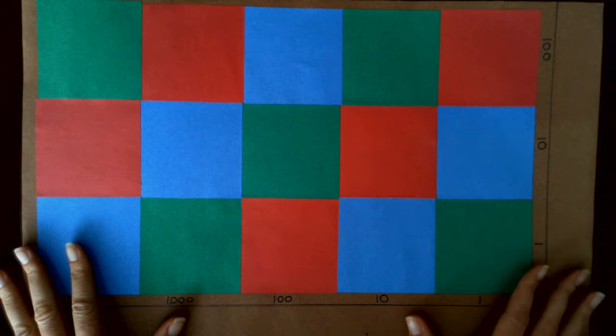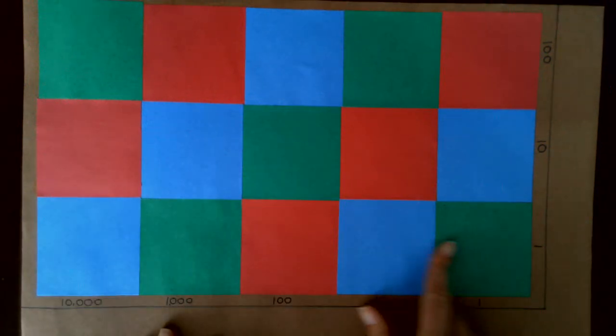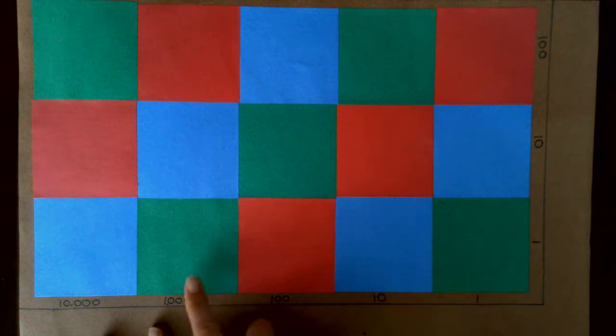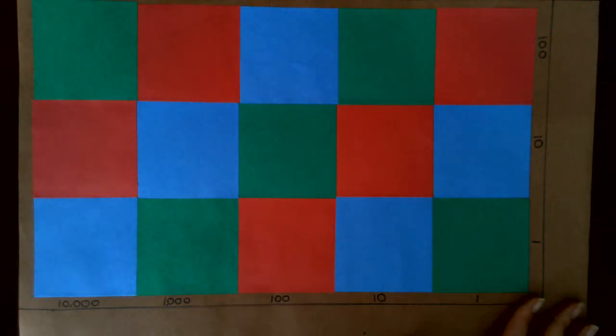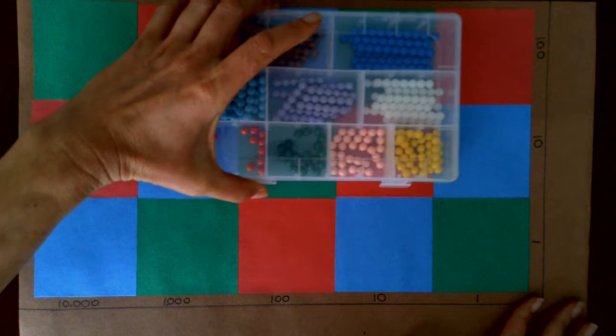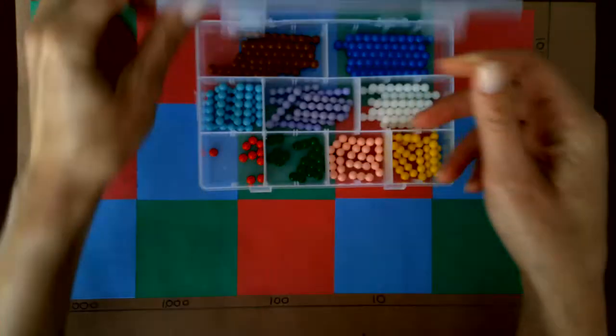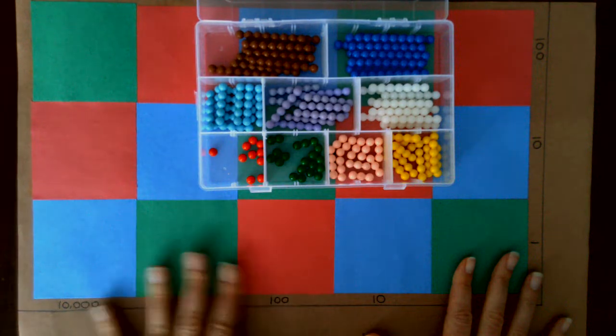One thing you'll notice is this is in the traditional Montessori place value colors and we're going to be using the colored bead bars as well. This is made out of paper but I've also seen some made out of felt.